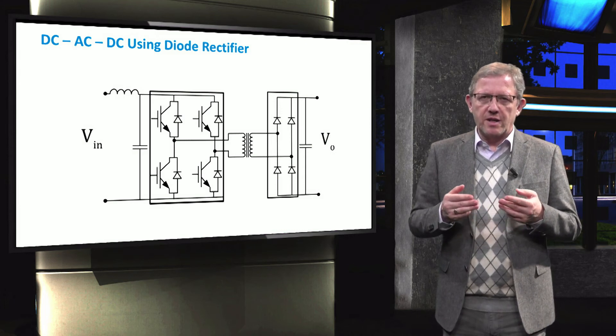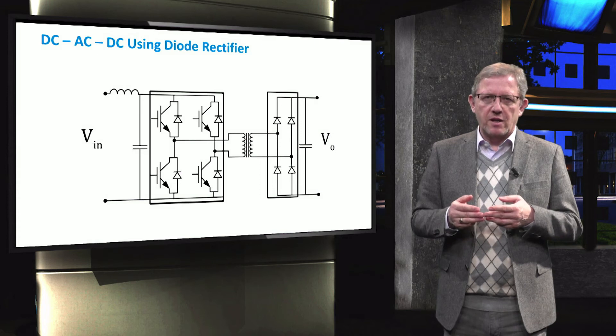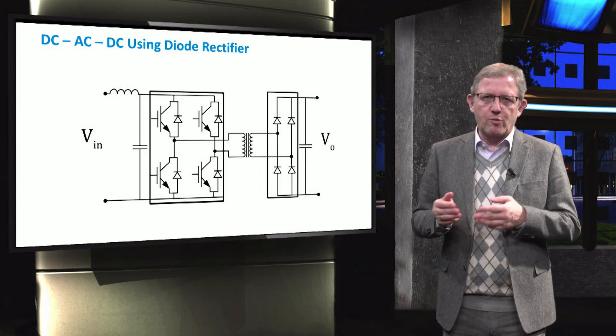However, as we will discuss in detail later, the diode bridge does not allow the current flow from the output to the input.